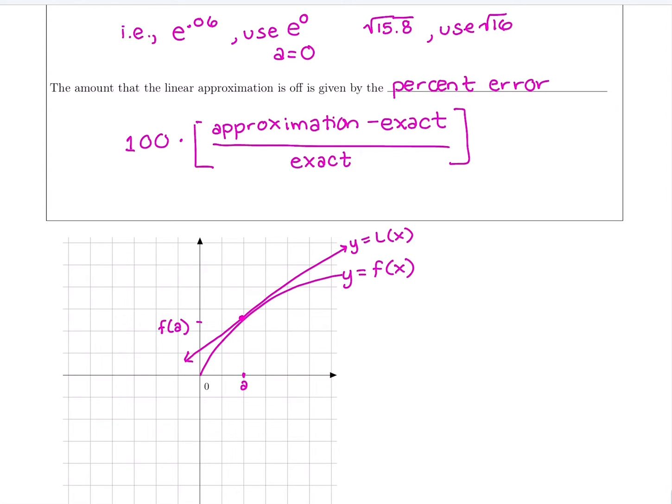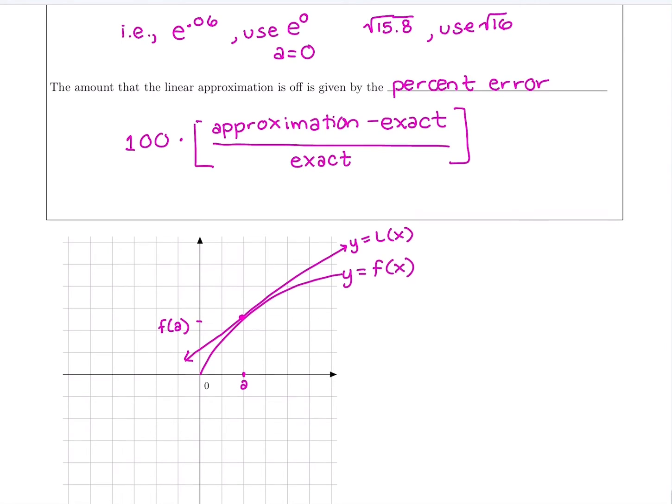Similarly, we're not going to use the square root of 16 to evaluate the square root of 21, because that's pretty far away. So this is the tangent line. Something we've talked about a lot in calculus is a tangent line at x equals a. That's what we're visualizing here.